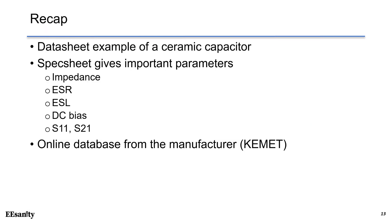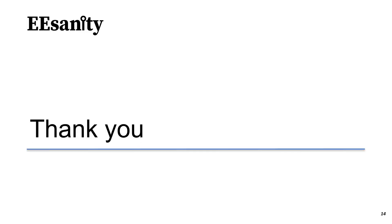Recap. We go over the datasheet example of a ceramic capacitor. We know that the specsheet or characteristics datasheet are giving you more important parameters, such as impedance versus frequency, ESR, ESL, DC bias, S11, and S21 parameters. Also, I show you the datasheet online from the manufacturer KMET, which is a very useful tool to understand the temperature rise. Thank you and see you next time.